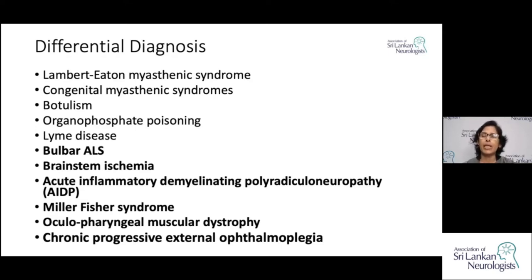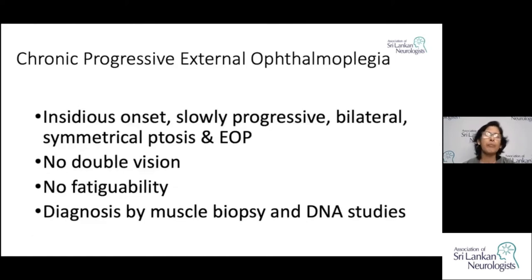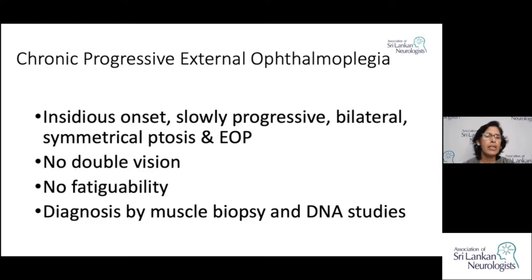Brain stem ischemia is another differential when you encounter a patient with dysarthria. AIDP is predominantly a sensorimotor disease — if someone reports numbness at the initial stage or pain in the hands and legs with weakness, it is unlikely to be Myasthenia Gravis. Miller-Fischer syndrome and oculopharyngeal muscular dystrophy are also differentials. Chronic progressive external ophthalmoplegia — a mitochondrial disorder — has very insidious onset, very slow progression, bilateral symmetrical involvement, and no double vision, diagnosed with muscle biopsy and DNA studies.